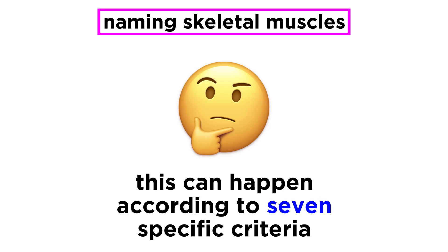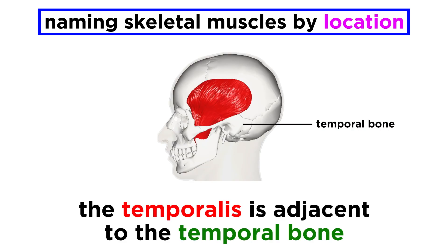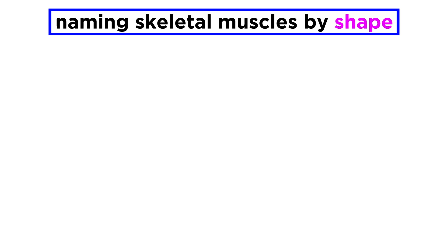Skeletal muscles also have specific names, and they are named according to any of seven specific criteria. Let's be aware of these criteria even if we don't go over the name of every single muscle. First there is muscle location — for example, the temporalis is adjacent to the temporal bone.